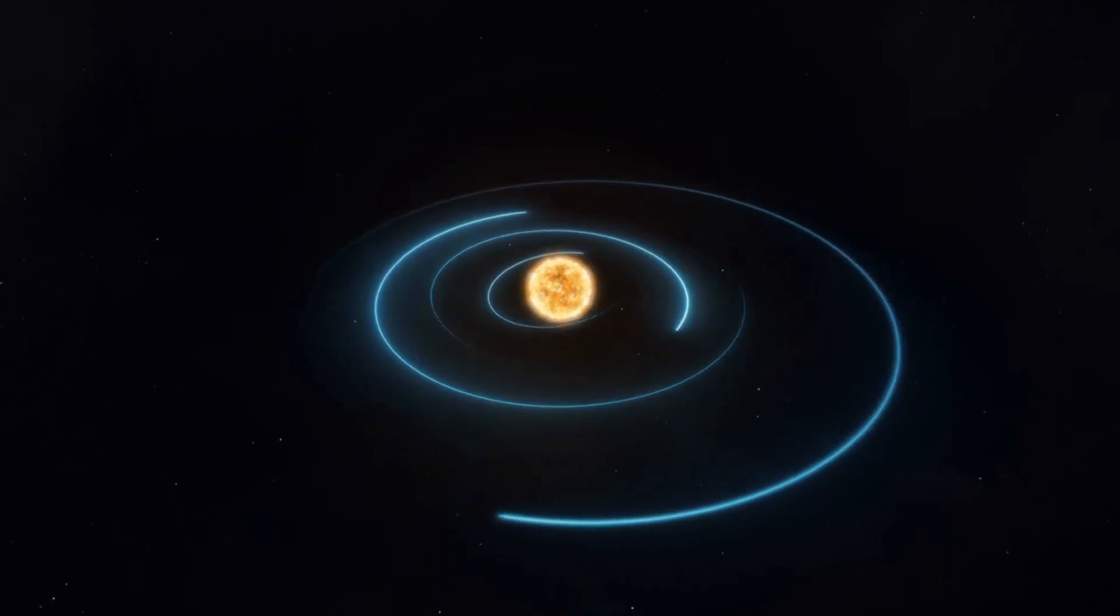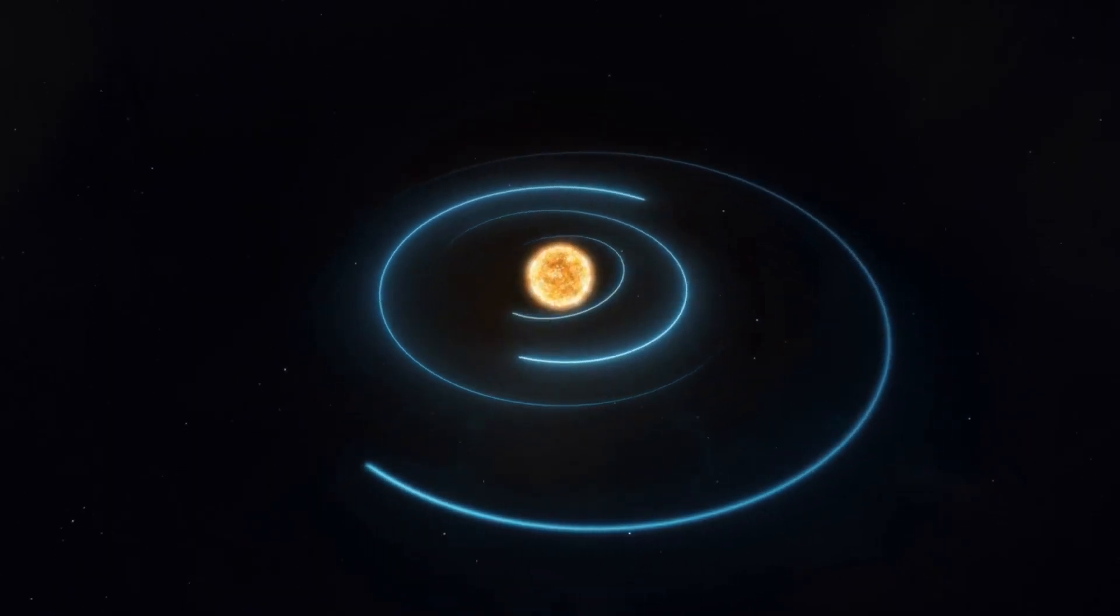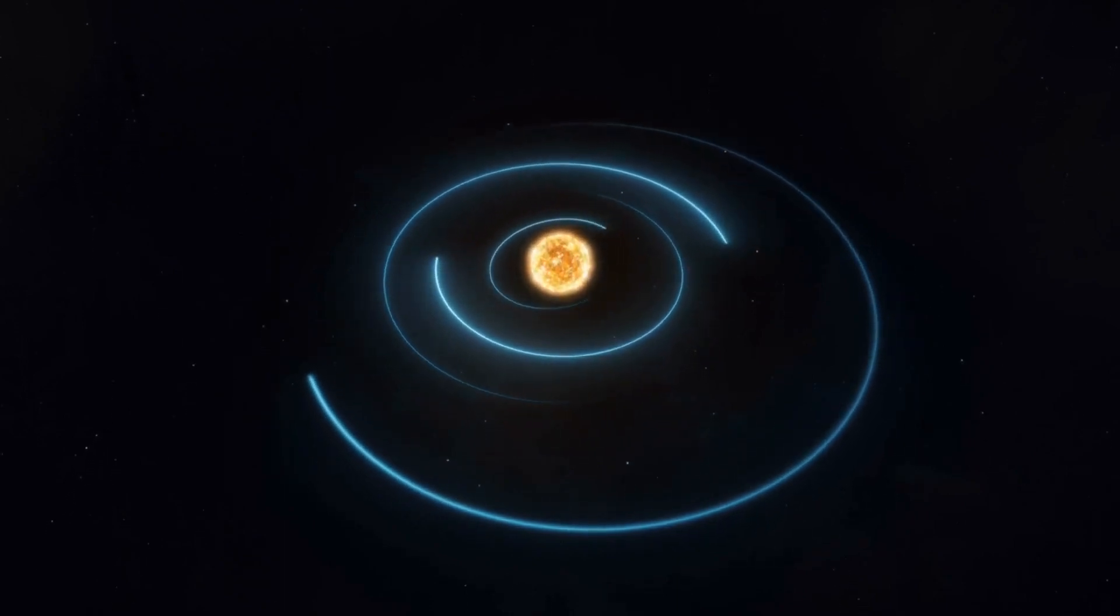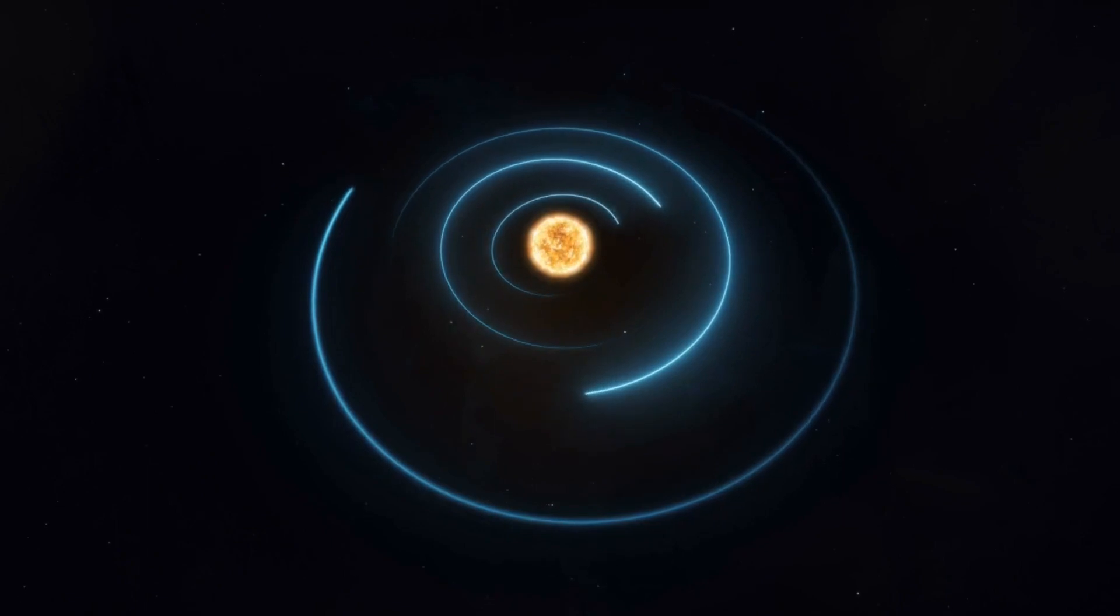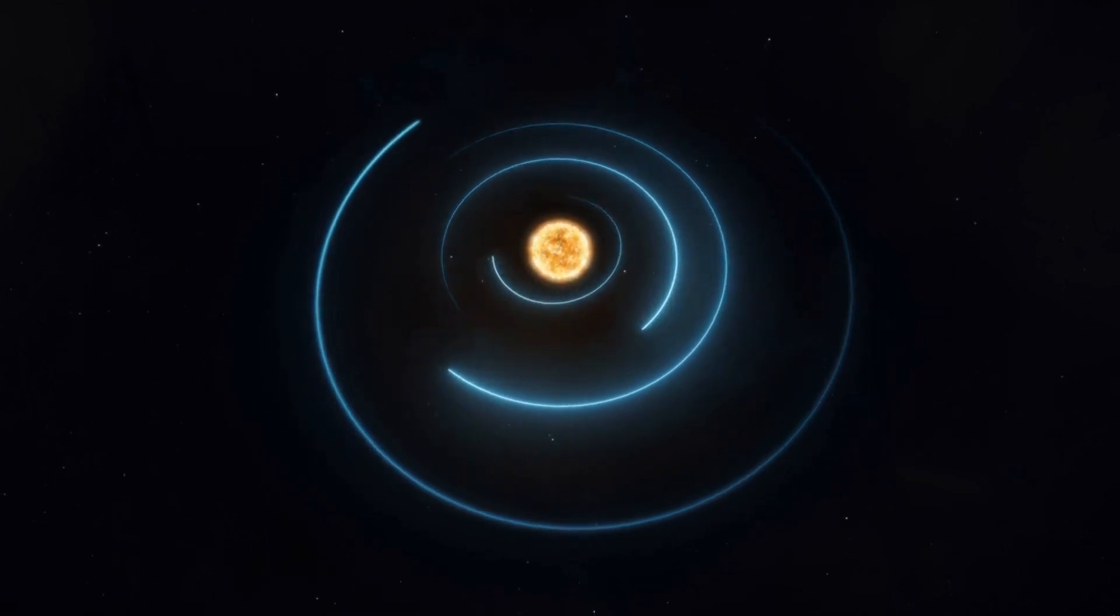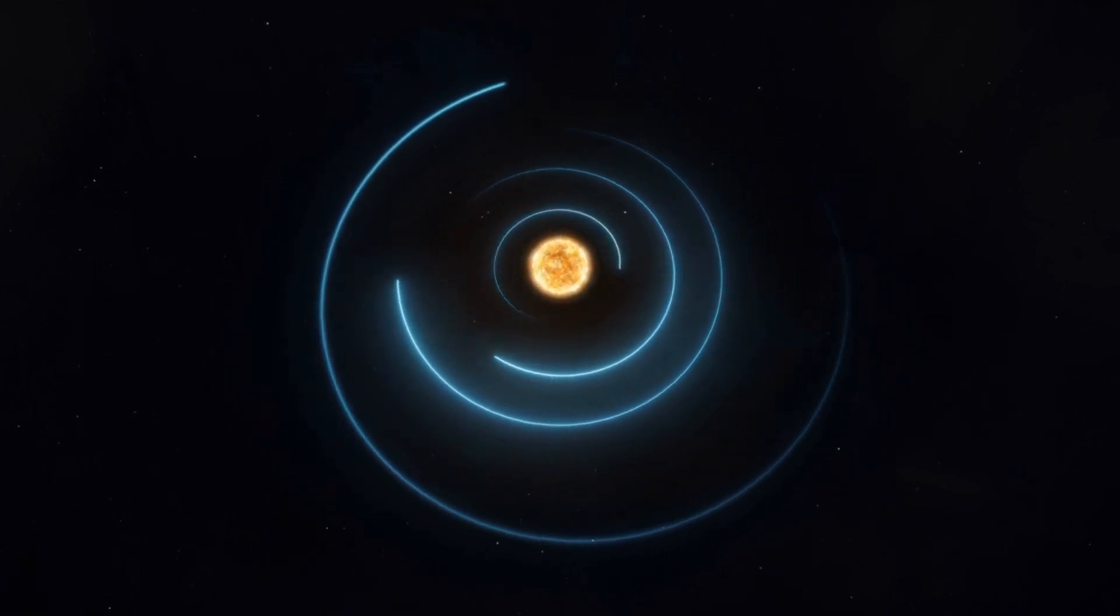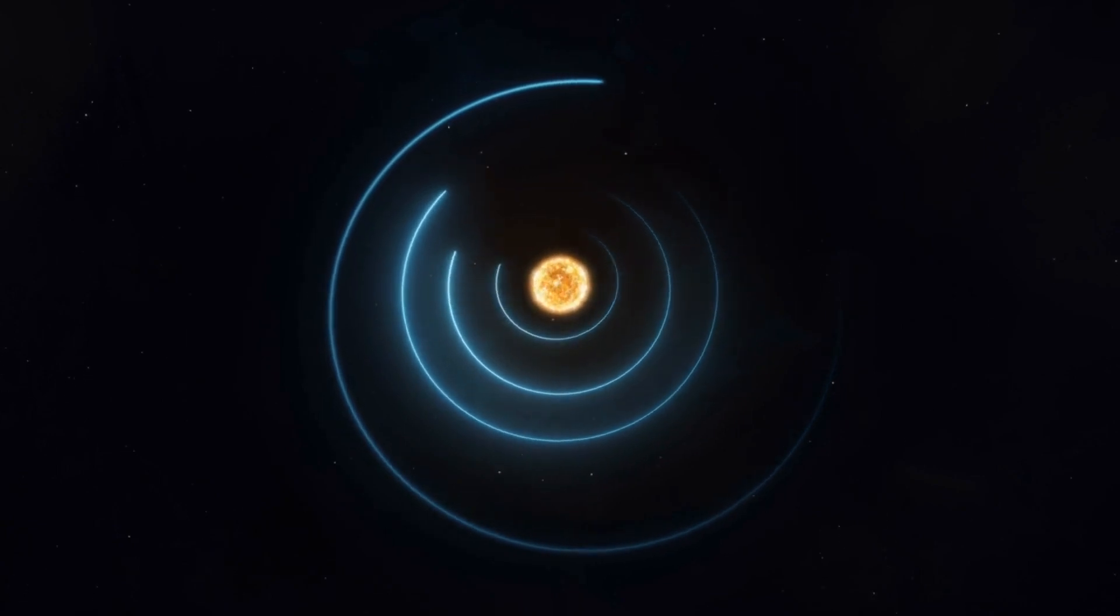Solar wind parameters experienced slight enhancement, characterized by speeds ranging from 429 to 512 kilometers per second. The total magnetic field ranged between 4 to 6 nT, while the Bz component fluctuated between plus 3 to 4 nT. The phi angle, which indicates the orientation of the interplanetary magnetic field, mostly exhibited positive values.